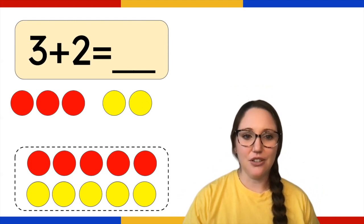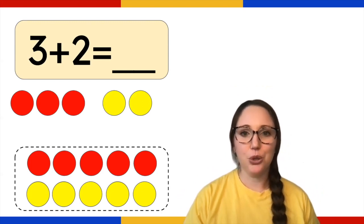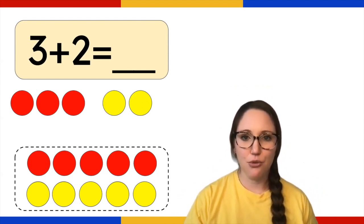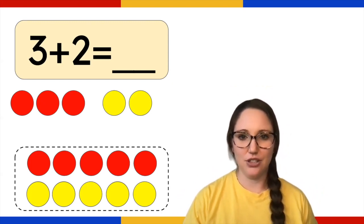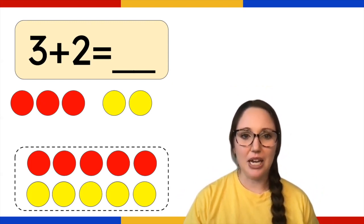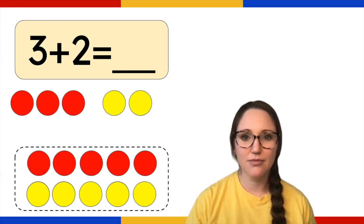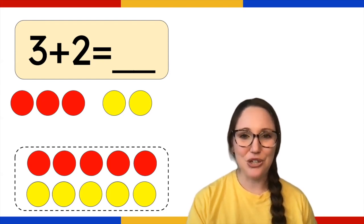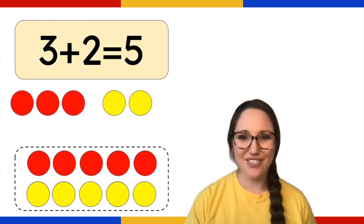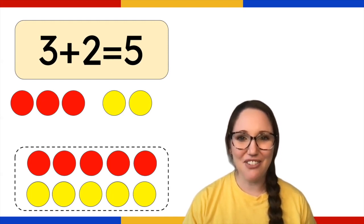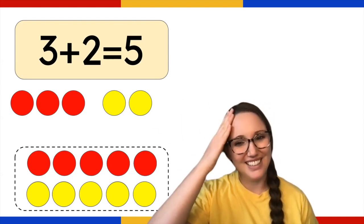Take your materials and create a picture for your number sentence. I've placed three red counters and two yellow counters to represent three plus two. Write your number sentence and the answer. Three plus two equals five. Give your brain a kiss if you got that correct. Great job.